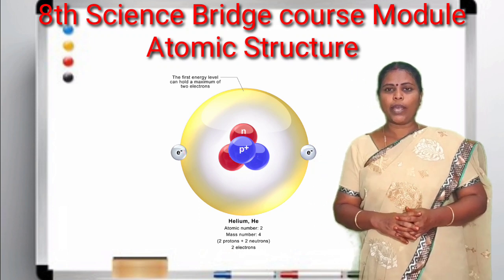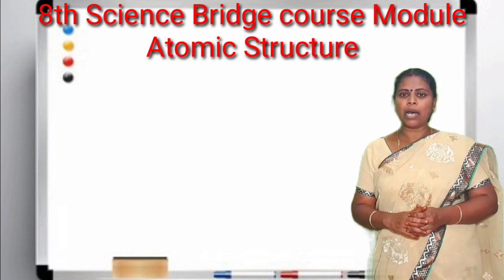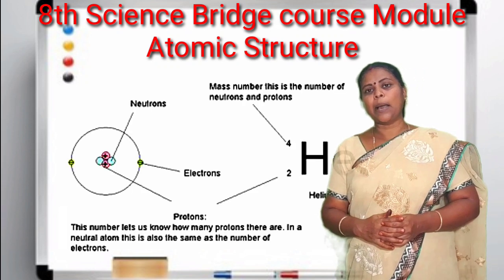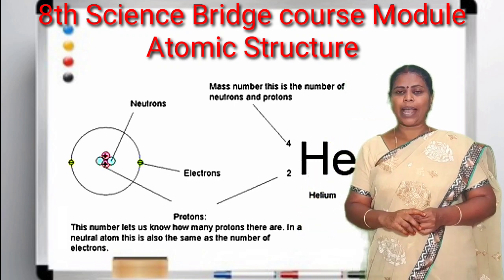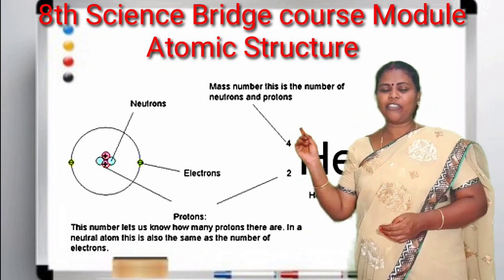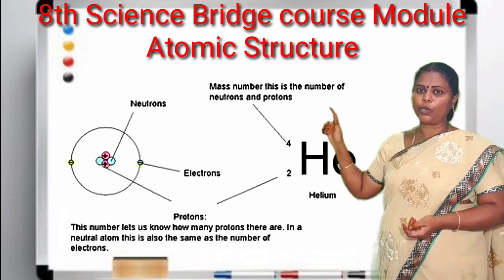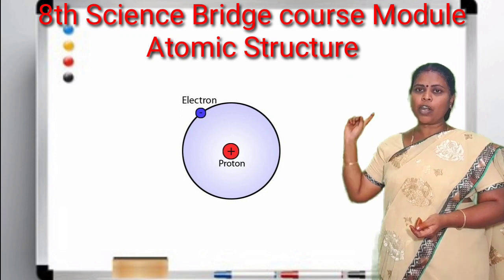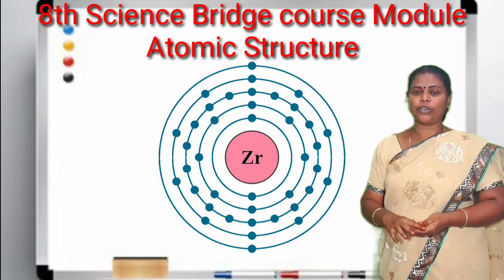Today we are going to see what is atomic number and what is mass number. Atomic number is nothing but the number of protons present in an atom. The atom will have proton and neutron in the center in the nucleus, and it has the electron which will be revolving around in a spherical path. These subshells are of 4 different types: S, P, D, and F.